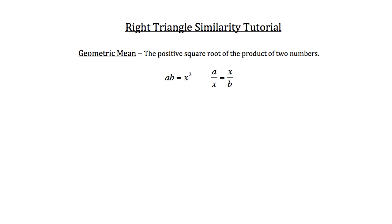The geometric mean is the positive square root of the product of two numbers. So if you were given a proportion like a over x is equal to x over b, all you need to do is use the cross product property rule. Multiply a times b and set that equal to x times x. Knowing that a and b would be integers, you could use them to solve for that variable x.